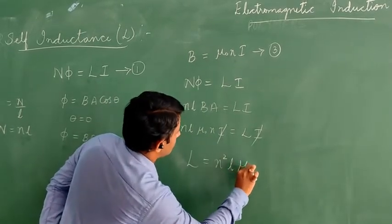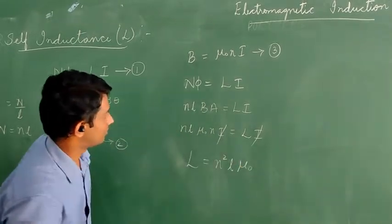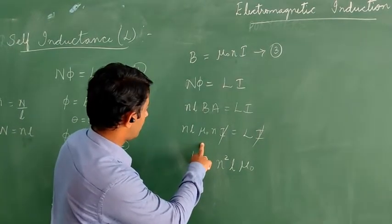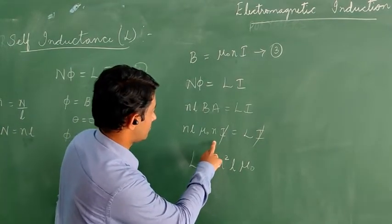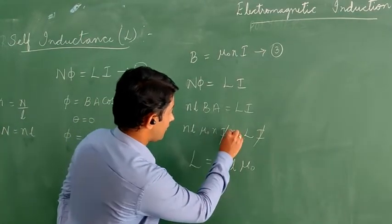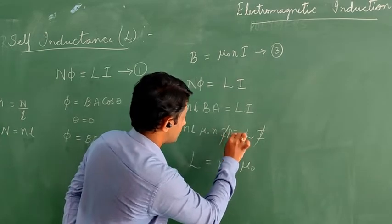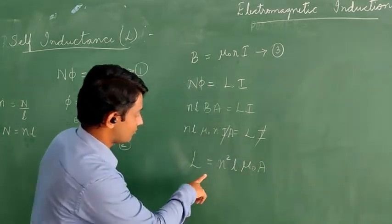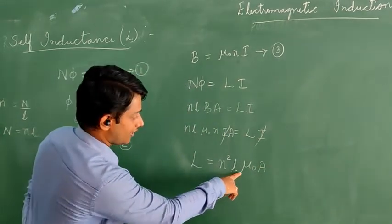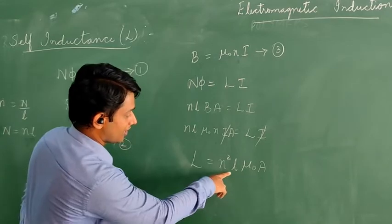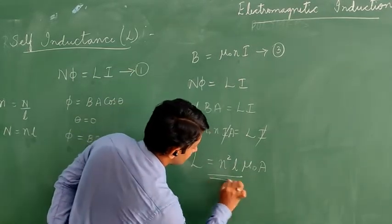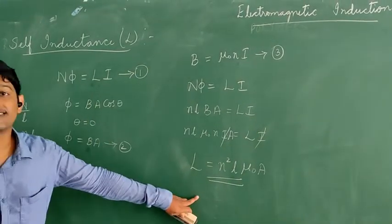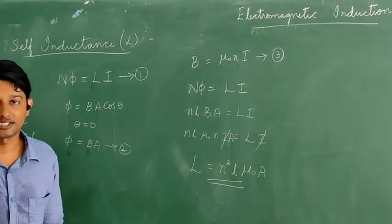So we get L equals μ₀n²LA, but simplifying: L equals μ₀n²A × L, where L on the right is the length of the solenoid. Therefore the expression for self inductance is L equals μ₀n²AL. This completes the derivation.